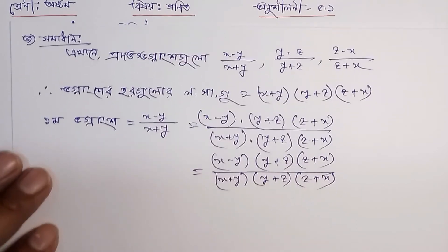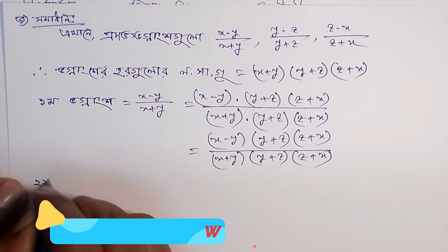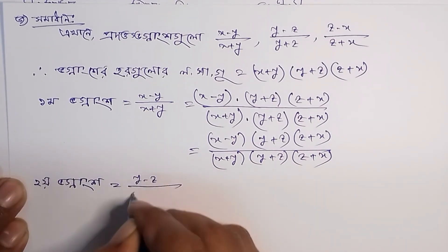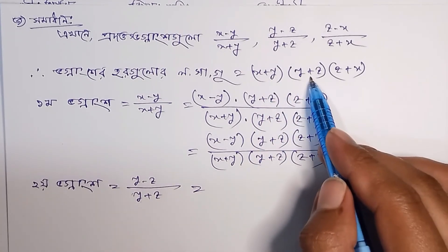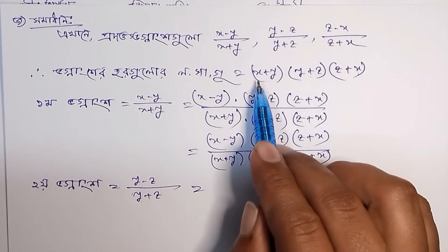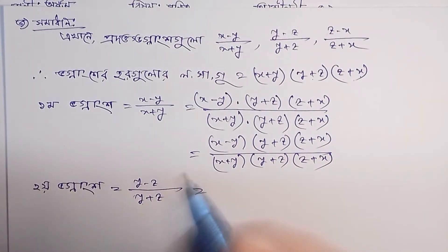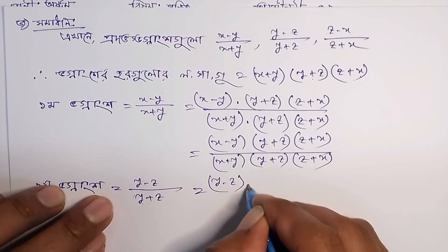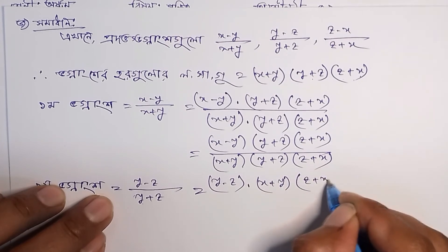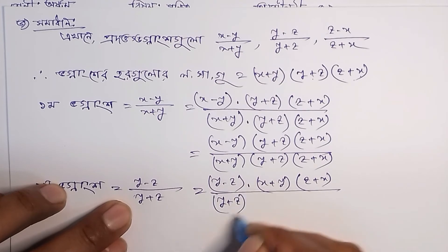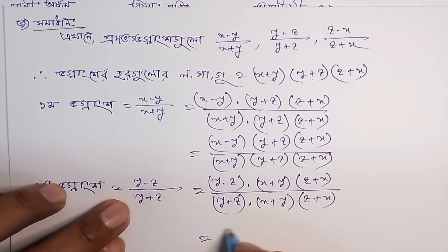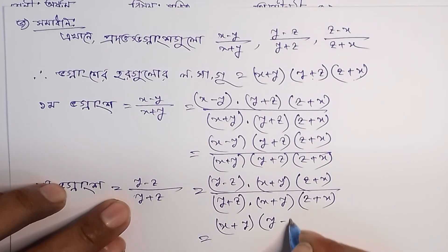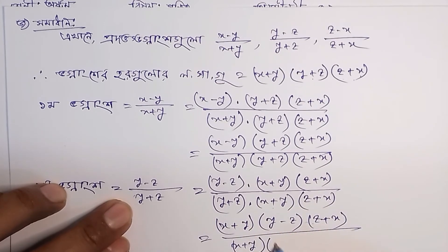Now, the second fraction Dq is equal to (y minus z) divided by (y plus z), is equal to y plus z. Put the value of (y plus z) into (z plus x): (y minus z) into (x plus y) into (z plus x) divided by (y plus z) into (x plus y) into (z plus x). First: (x plus y) into (y minus z) into (z plus x) divided by (x plus y) into (y plus z) into (z plus x).